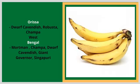Banana varieties grown in Orissa include Dwarf Cavendish, Robusta, and Kampa. Varieties grown in West Bengal include Mortman, Kampa, Dwarf Cavendish, Giant Governor, and Singapuri.